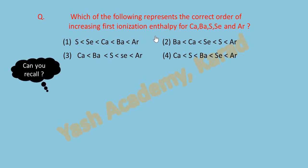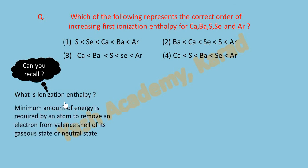Now, can you recall what is ionization enthalpy? It is the minimum amount of energy required by an atom to remove an electron from valence shell of its gaseous state or neutral state.